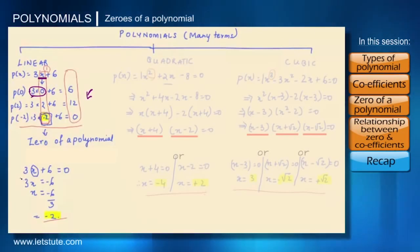When we were finding the zeros for this linear polynomial 3x plus 6, what we actually did was we got this variable in terms of its coefficients.